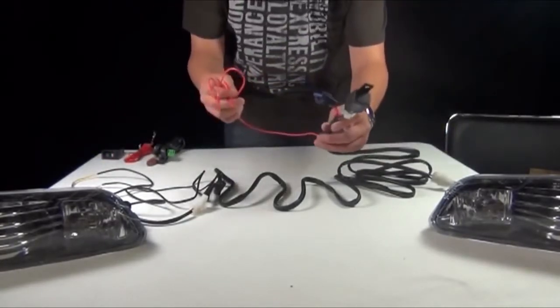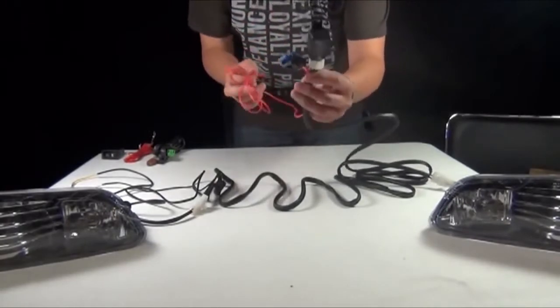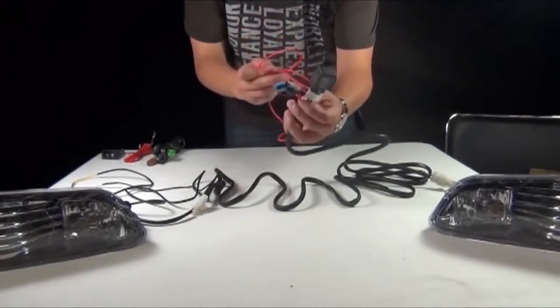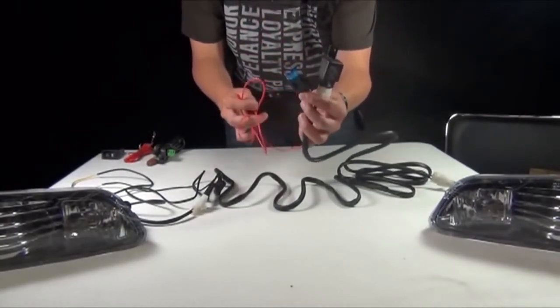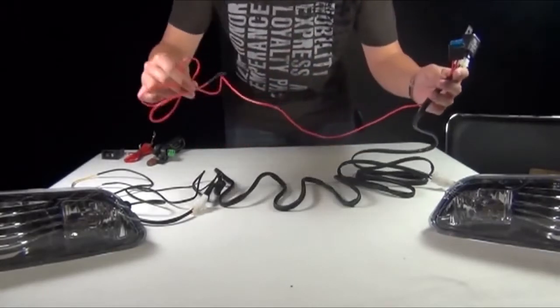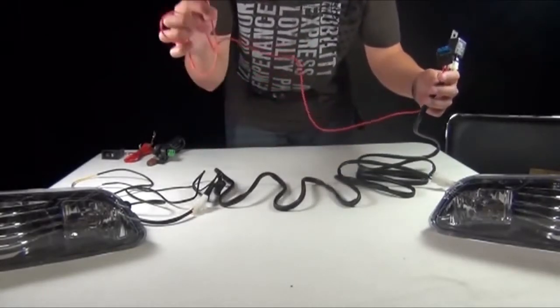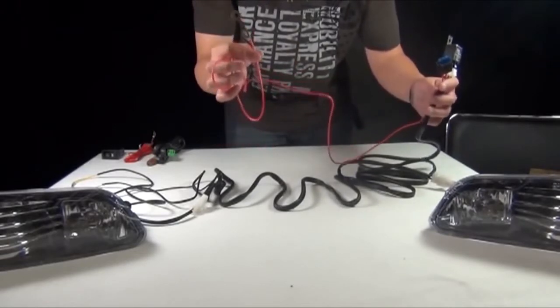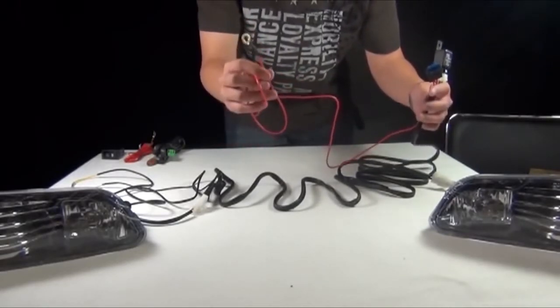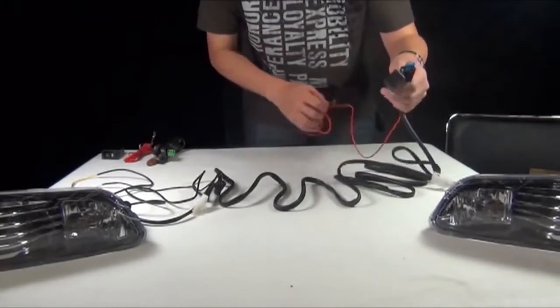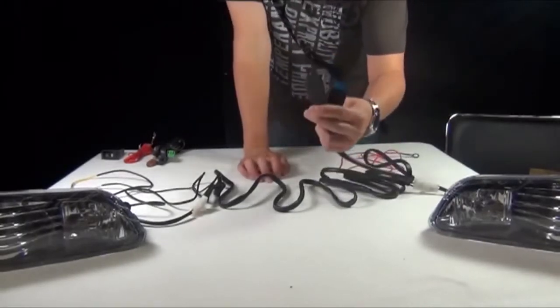On the other end of the wiring kit, you have the relay, the fuse box, and a red wire. For the red wire, you will hook this up into any type of power source or to the battery terminal.